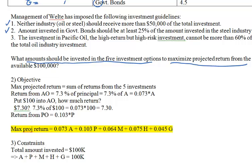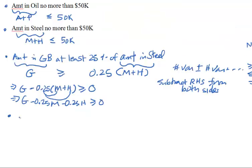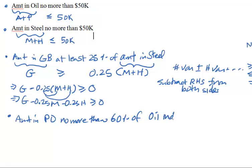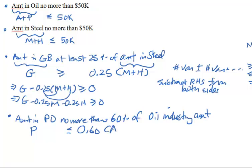The third guideline says the investment in Pacific Oil cannot be more than 60% of the total oil industry investment, to keep a lid on the high-risk Pacific Oil investment. Translating: P ≤ 0.60 × (A + P), where the oil industry total is A + P.